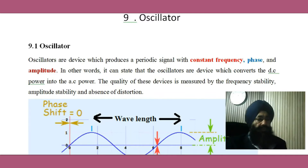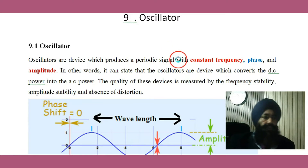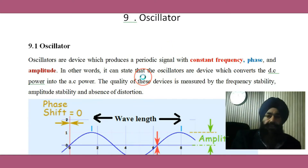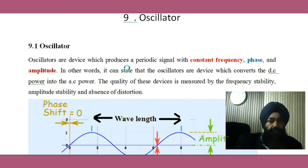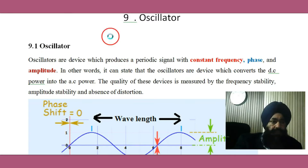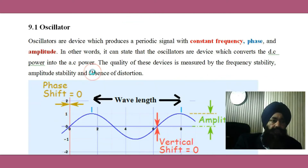My dear friends, today our topic is to discuss about oscillators. Oscillators are electronic devices which produce a periodic signal — a signal which repeats after equal intervals of time, with constant frequency, phase, and amplitude. In other words, oscillators are devices that convert DC power to AC power.